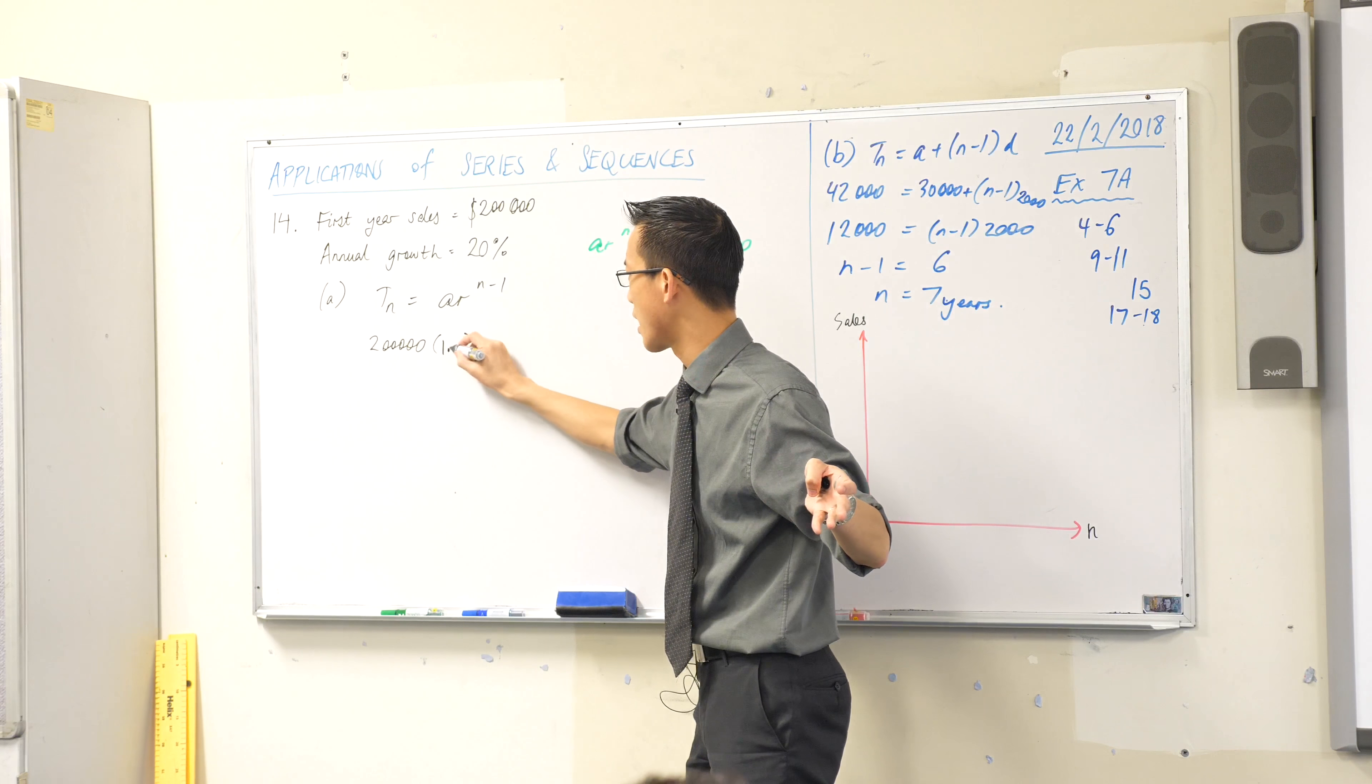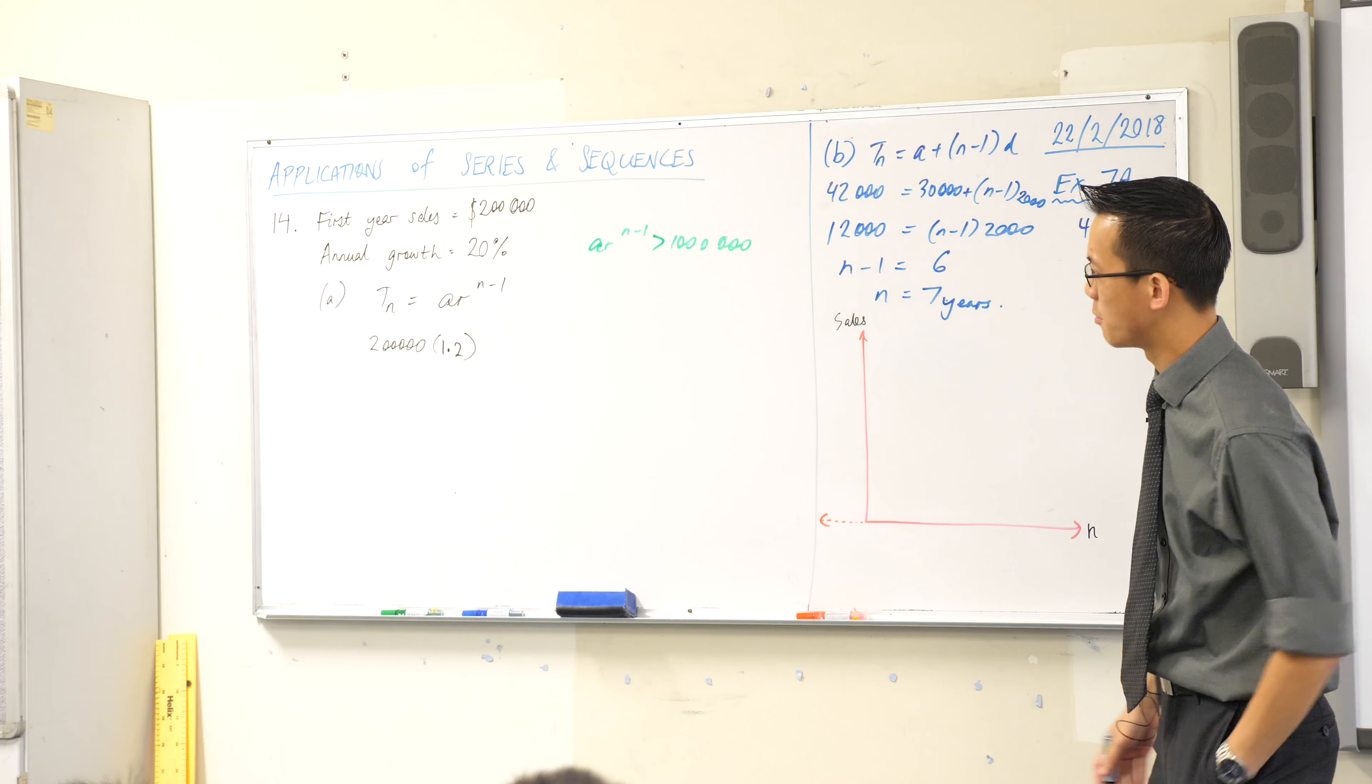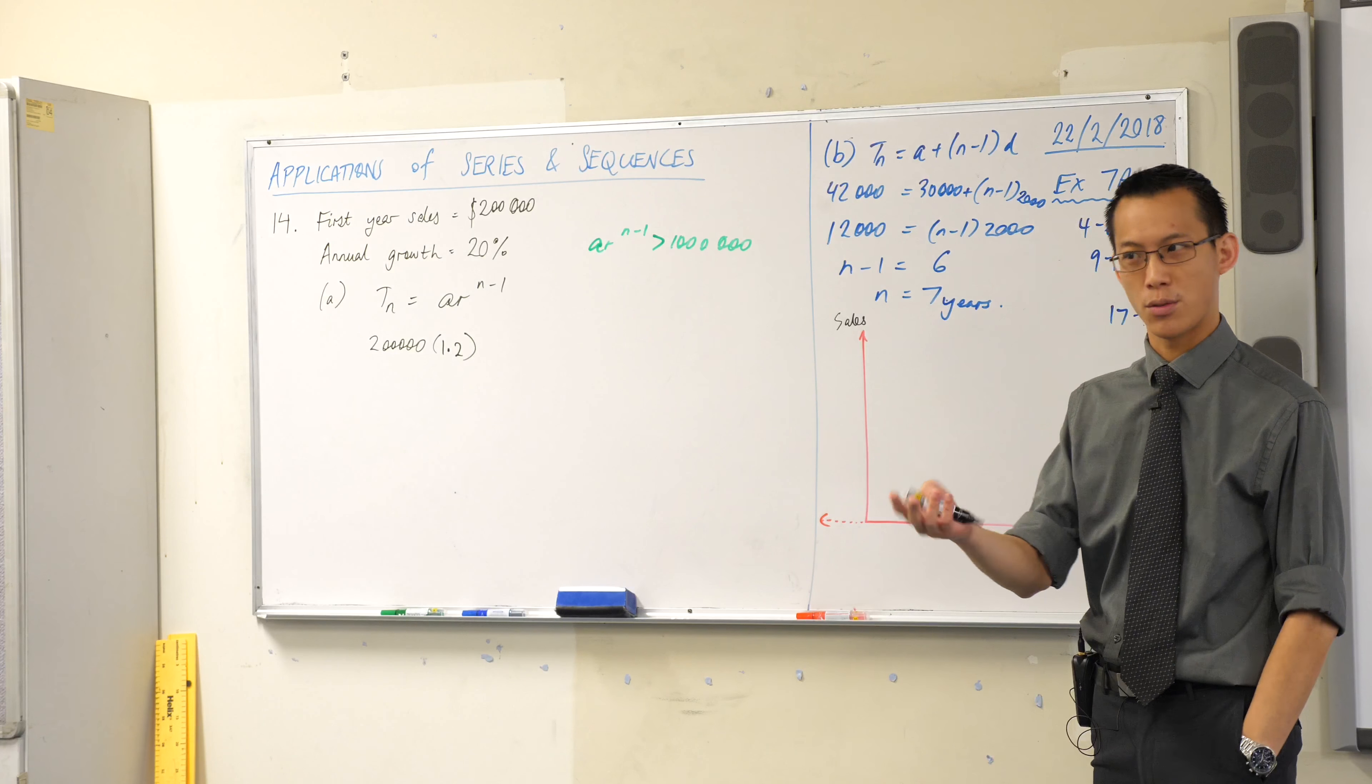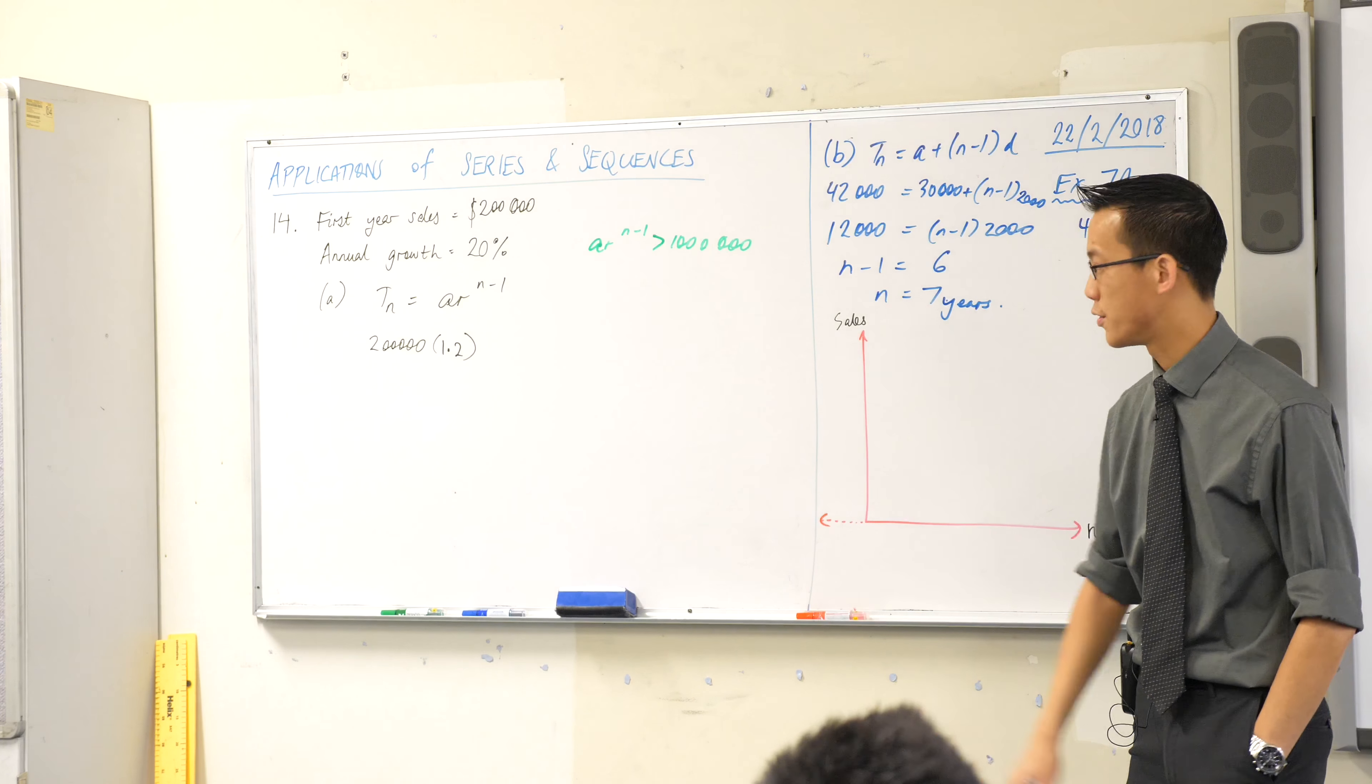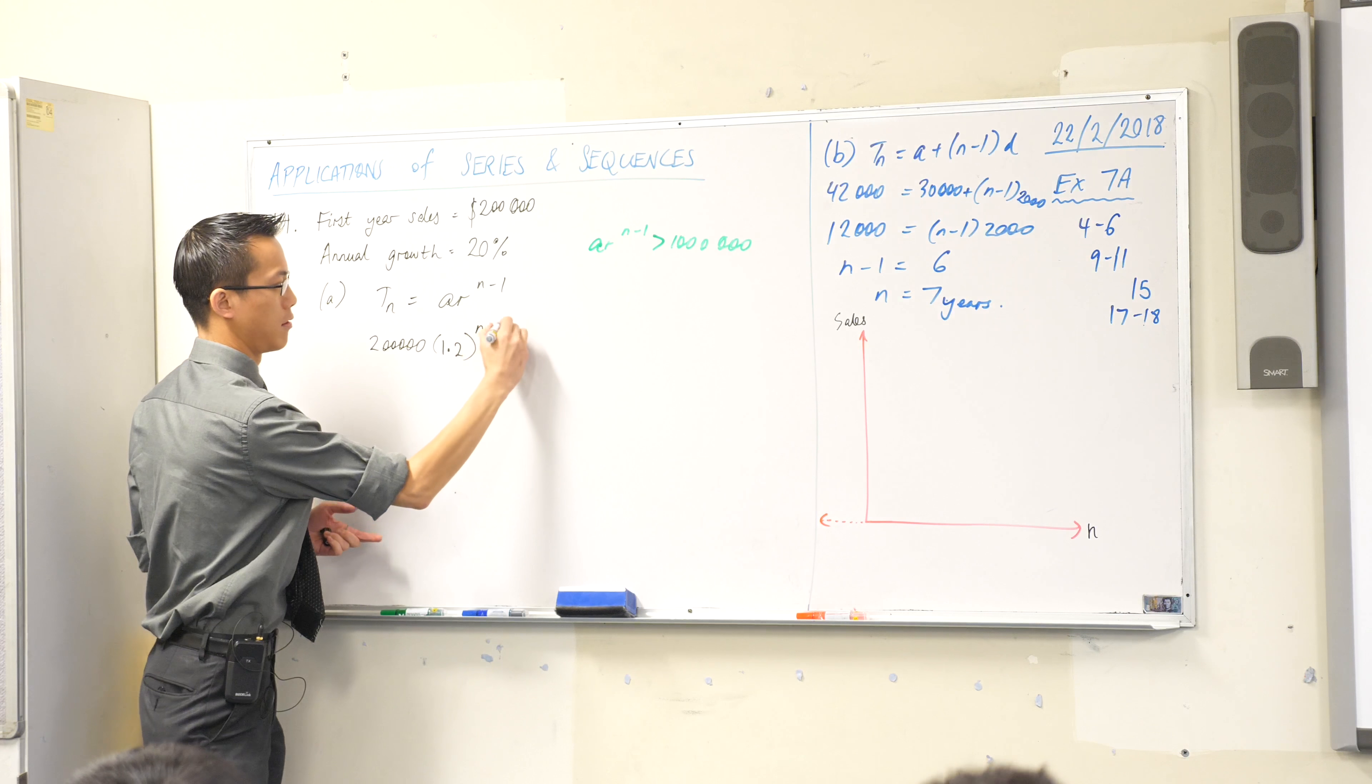So instead of 120, I'm going to write it as a decimal, 1.2. It's just faster and it's less things to write down because 120% of course means 120 divided by 100. Okay, now n minus 1. That's a bit I don't know, so I'm just going to leave it there.